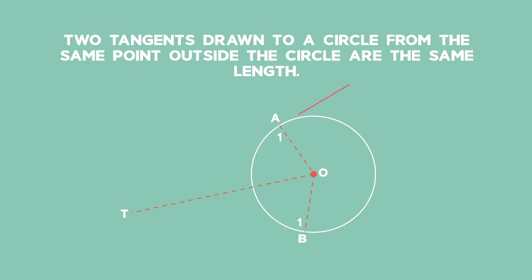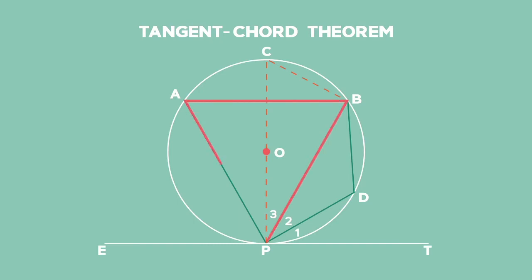Tangents from the same point outside the circle are the same length. And finally, the tangent chord theorem which states that the angle between the tangent to a circle and the chord drawn from a point of contact is equal to the angle in the alternate segment.